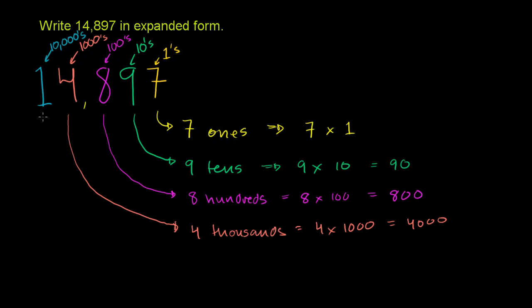And then finally we have this 1, which is sitting in the 10,000 place. So it literally represents 1 ten thousand. Or you could imagine if these were kind of poker chips, that would represent one blue poker chip, and each blue poker chip represents 10,000. And 1 ten thousand is the same thing as 1 times 10,000, which is the same thing as 10,000.